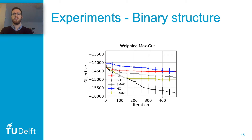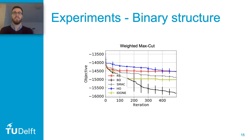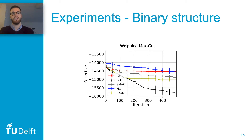The second structure we look at is a binary structure, in this case the weighted max cut graph problem. Once again, Bayesian optimization is performing the best among the algorithms, with IDON second best. Both of the continuous surrogates are performing better than the discrete surrogates on this binary problem. We don't fully know why, and the paper discusses this more, but it's an open question — Bayesian optimization doesn't necessarily work better with binary variables in theory, yet it still performs the best.